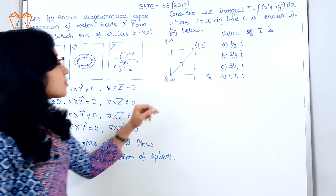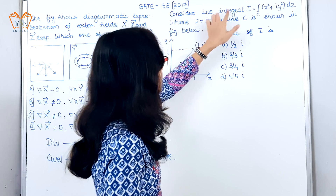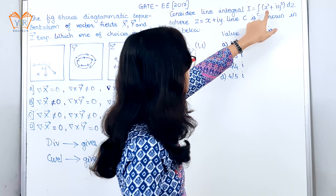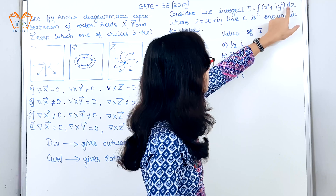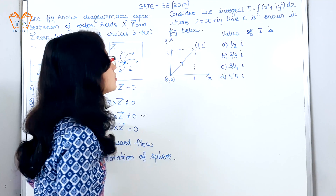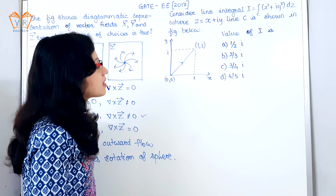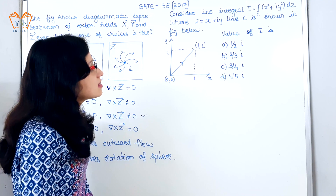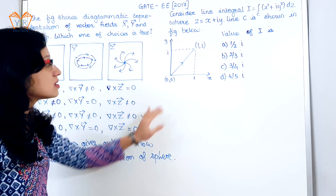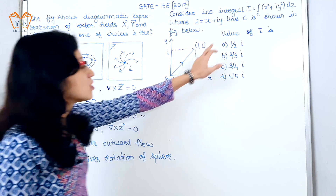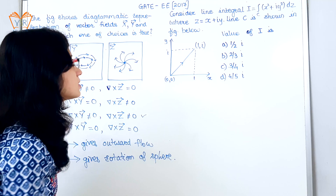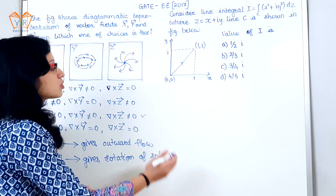Next example. Consider the line integral I = ∫(x² + iy²) dz, where z = x + iy. Line C is shown in the figure given below. You have to find out the value of I. The given four options are shown on the board.